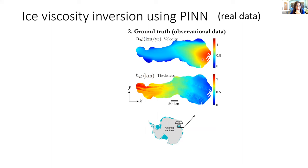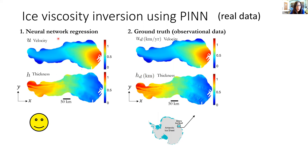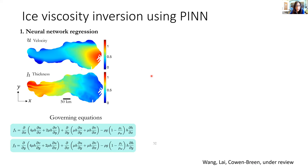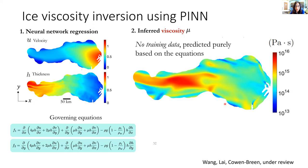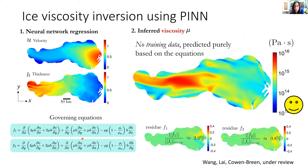Moving to real observations, we use velocity and thickness data on the Emery ice shelf. We confirm that the neural network can approximate the velocity and thickness fields, and then by solving the shallow shelf equations, the network predicts the ice effective viscosity — a quantity we cannot directly measure in the field. Because we have no training data for viscosity itself, this prediction is only possible because we include the governing equations during training. The output is a two-dimensional field of ice effective viscosity, with equation residuals about two orders of magnitude smaller than the terms in the equation.